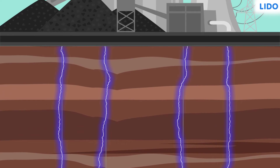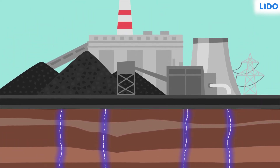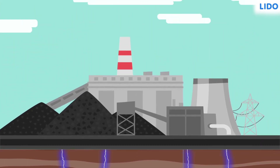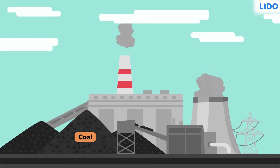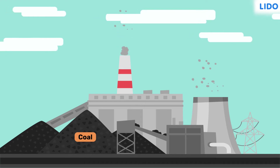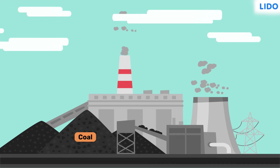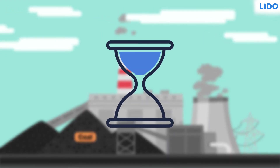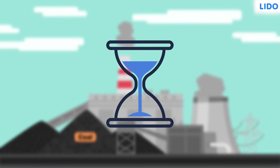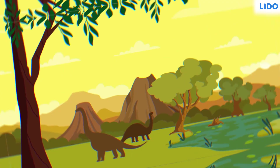That's because a major amount of electricity comes from coal, and coal itself takes about millions of years to form. Let us go back in time and help Meera understand how coal is formed.